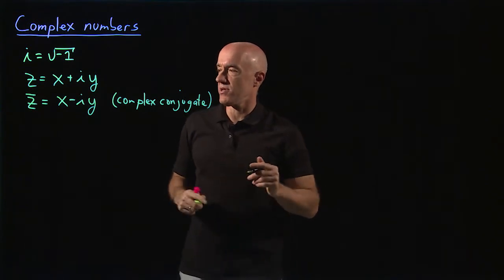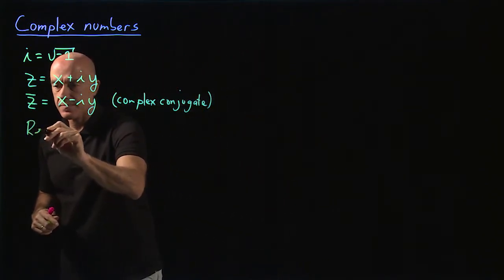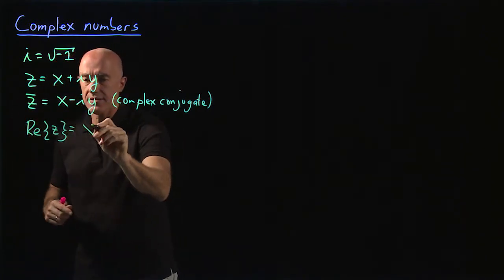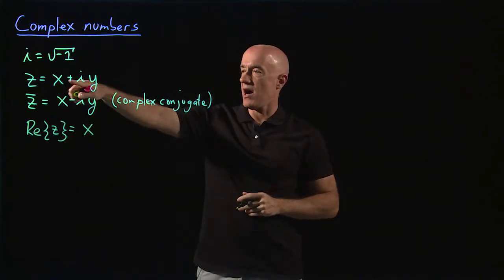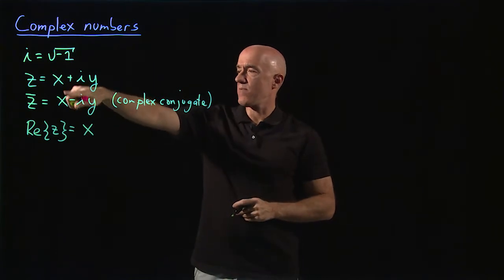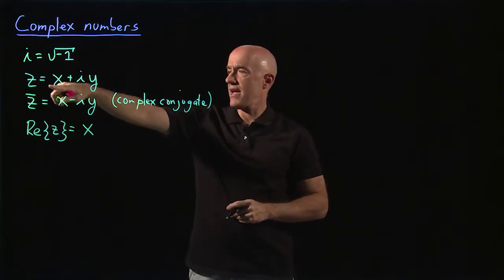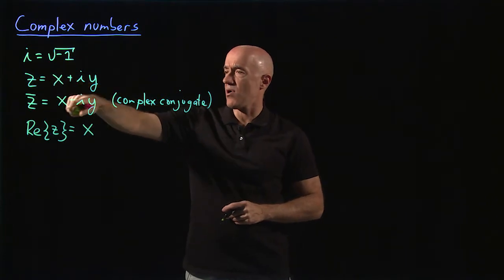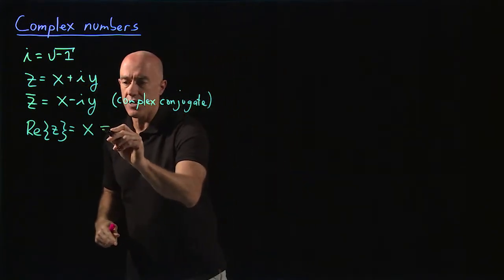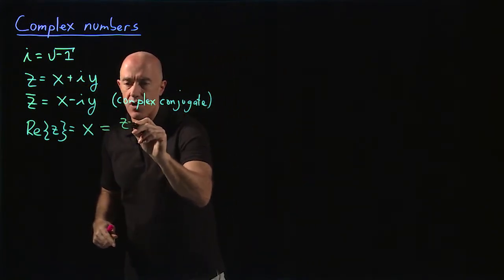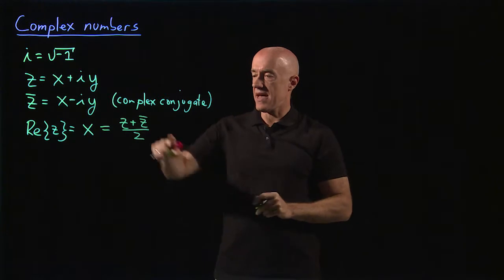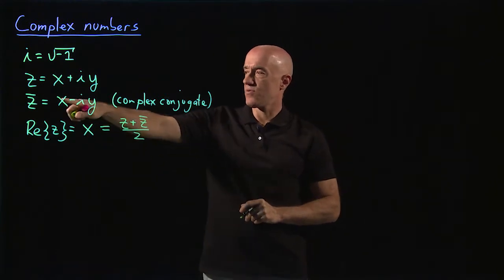There are two other functions. There's the real part of z — that's equal to x, the part of z that doesn't have i in it. You can form x using z and z-bar: add z and z-bar, the i·y cancels, and you end up with 2x. So the real part of z is a linear combination: z plus z-bar divided by 2. That's real — that's the real part of z.